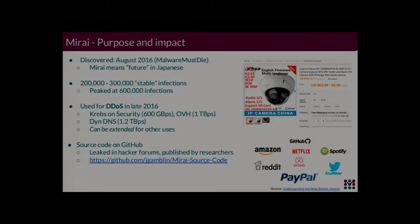The types of devices infected — in one of the source code files, they actually mentioned model numbers and models of specific IoT devices that were targeted. One device I found on AliExpress was selling for $62. A lot of the DVR devices were specifically targeted.